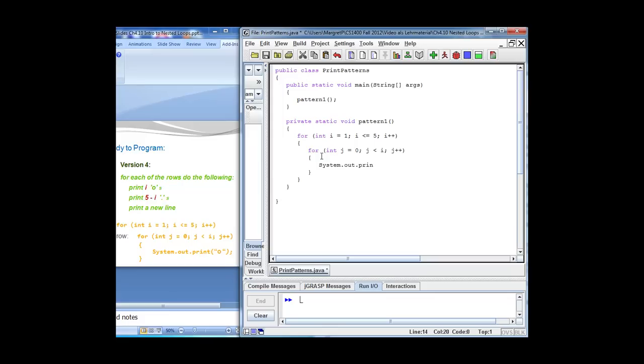So the next thing I need to do is print 5 minus i dots. That is very analogous. So here I see for, integer j is 0, j is less than 5 minus i, j plus plus. And this time we are not printing a circle, this time we are printing a dot, system out, print, dot.